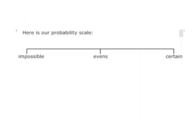We're back now to looking at our probability scale. When we started looking at our probability scale, we used the words impossible, even, and certain. But in maths, although our language is very important, we also need to link it with numbers. So we can now change the probability scale and link it with numbers. The probability of something never happening or being impossible — the best number to represent that is zero, as in it will never happen.